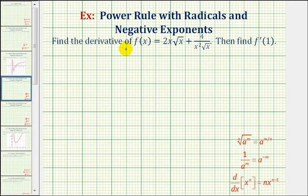We want to find the derivative of f of x equals 2x square root x plus 4 divided by x squared square root x, and then find f prime of 1.